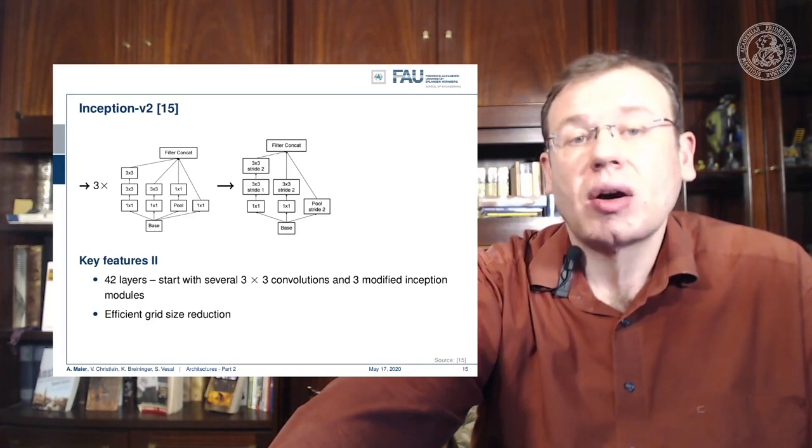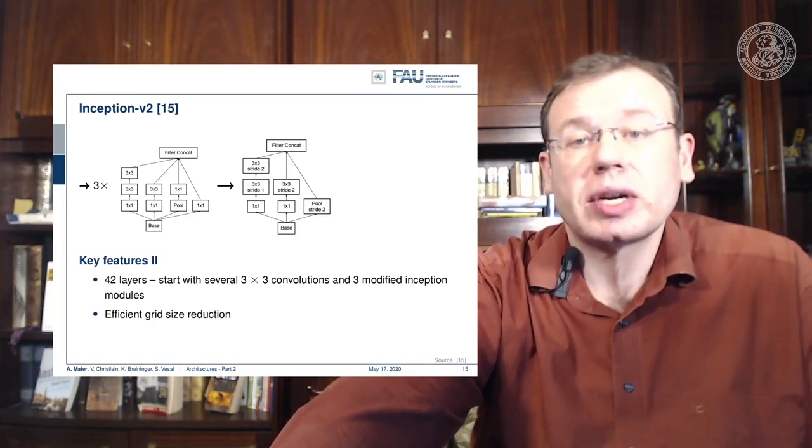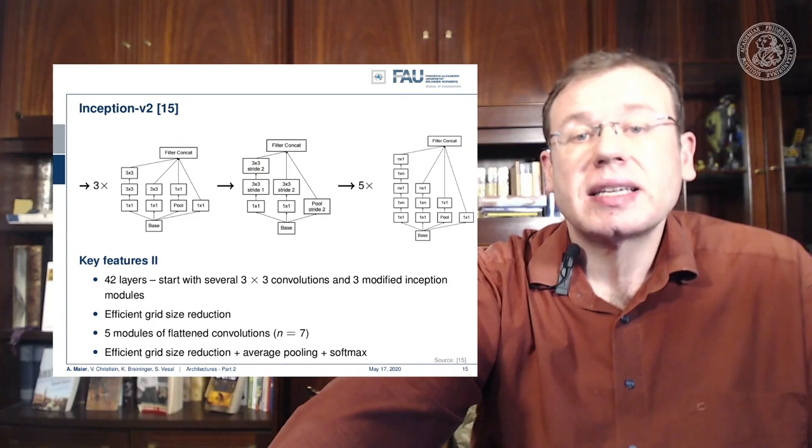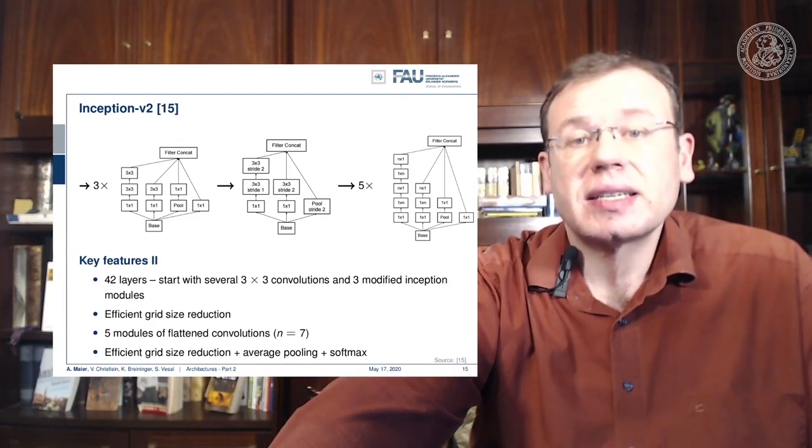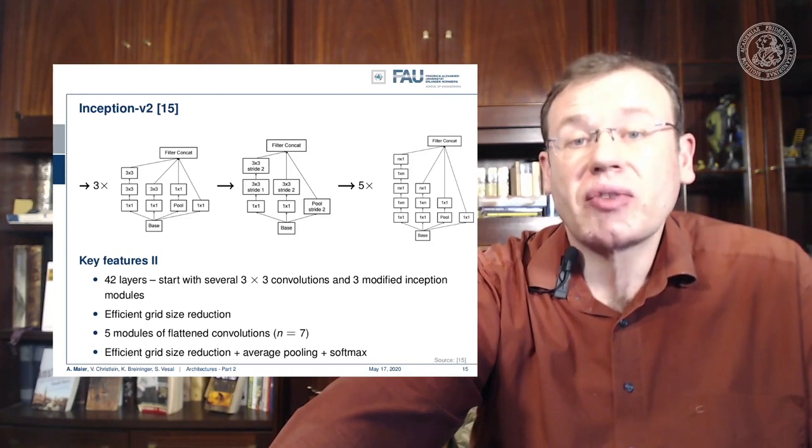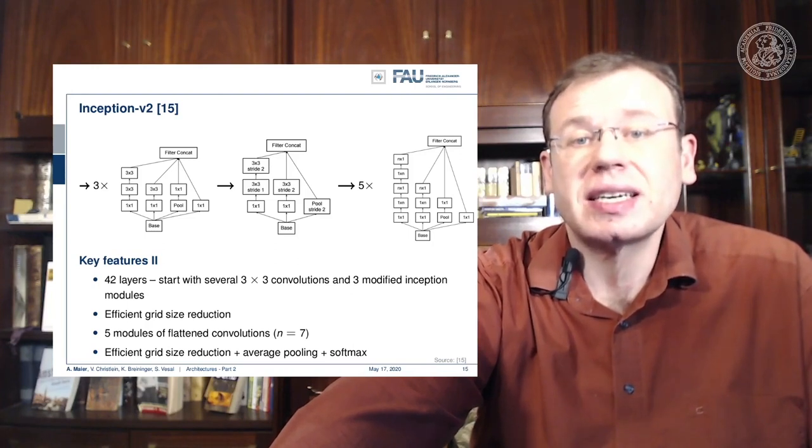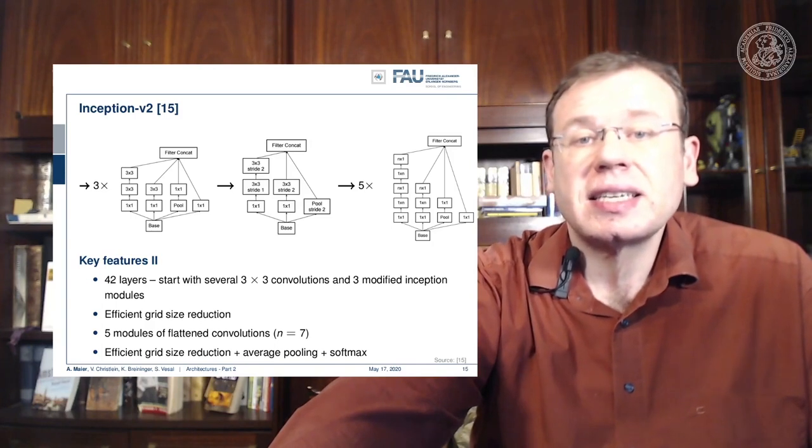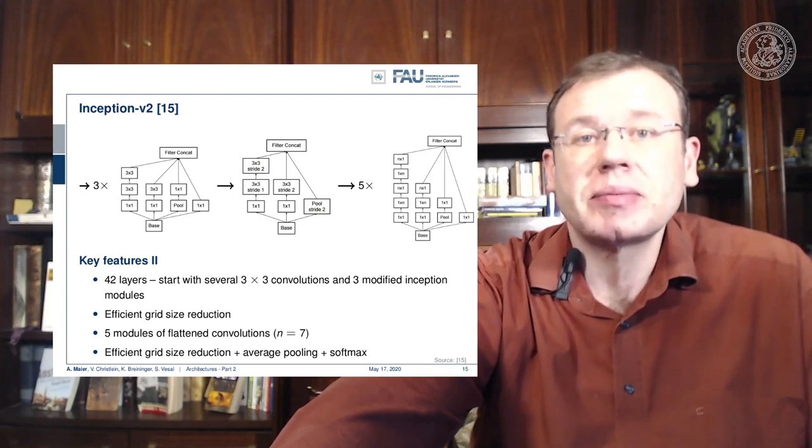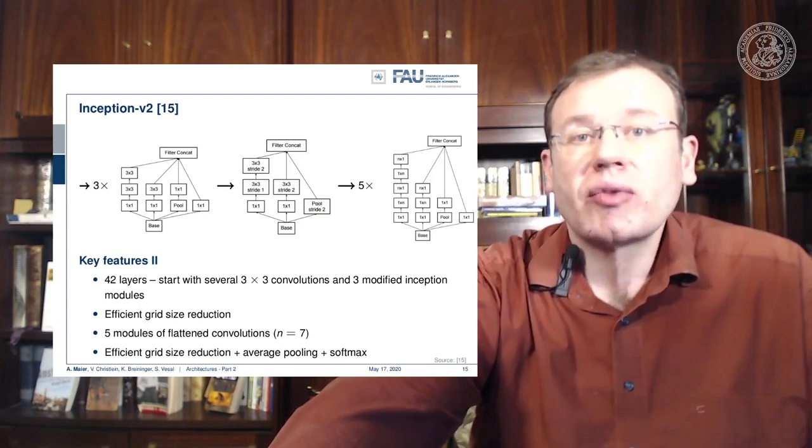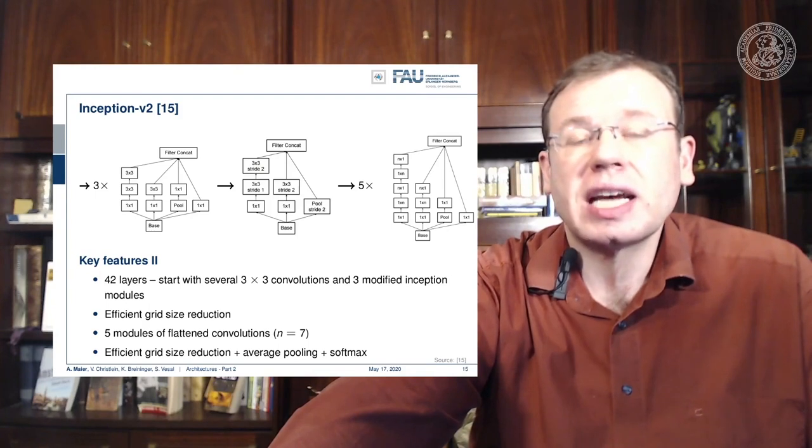the option of the different pooling operations. The next idea then was to five times introduce modules of flattened convolutions, and here the idea is to express the convolutions no longer in 2D convolutions but instead you separate them into convolution into x and y direction, and you alternatingly produce those two convolutions.